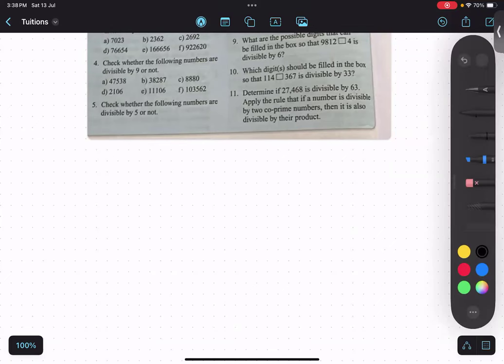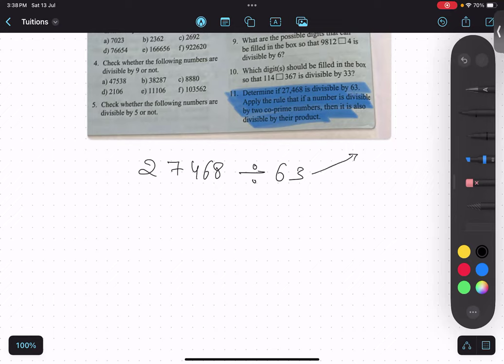In question number 11, we have to determine whether 27468 is divisible by 63 or not. So tell me, what is the divisibility rule of 63?